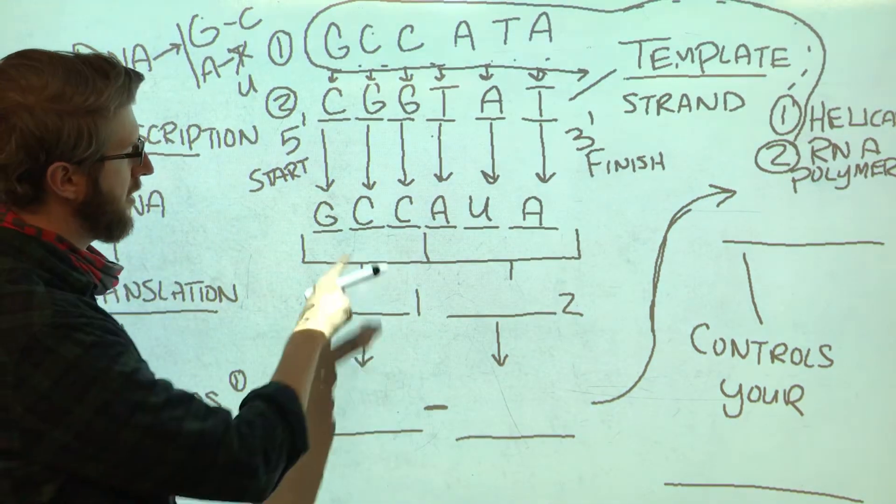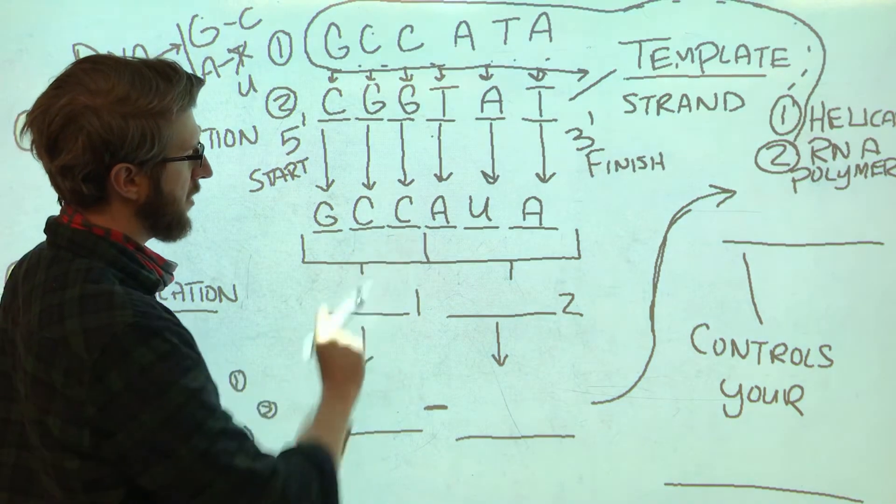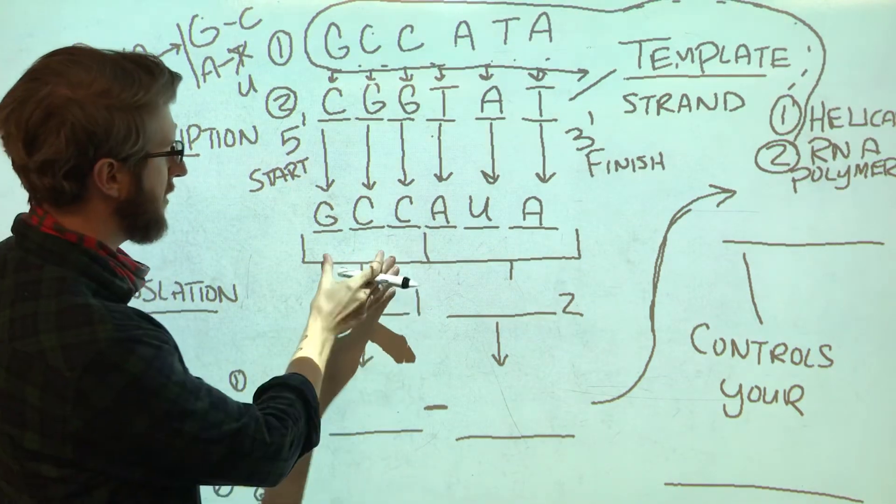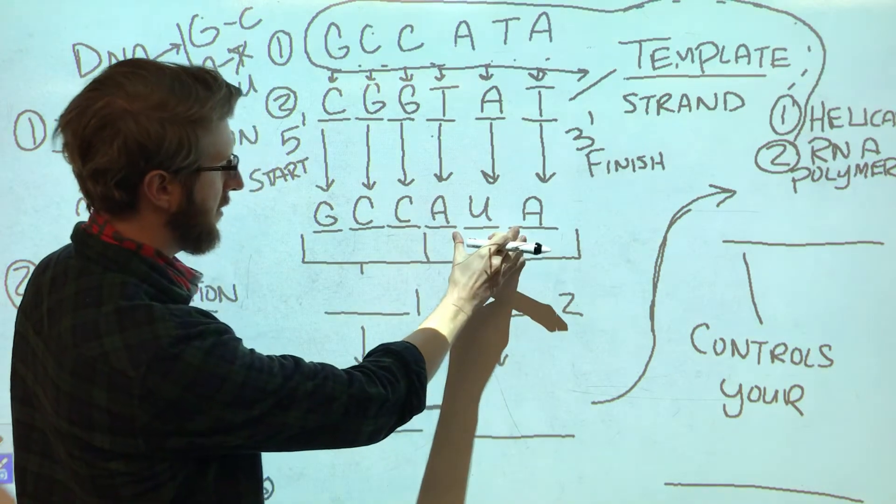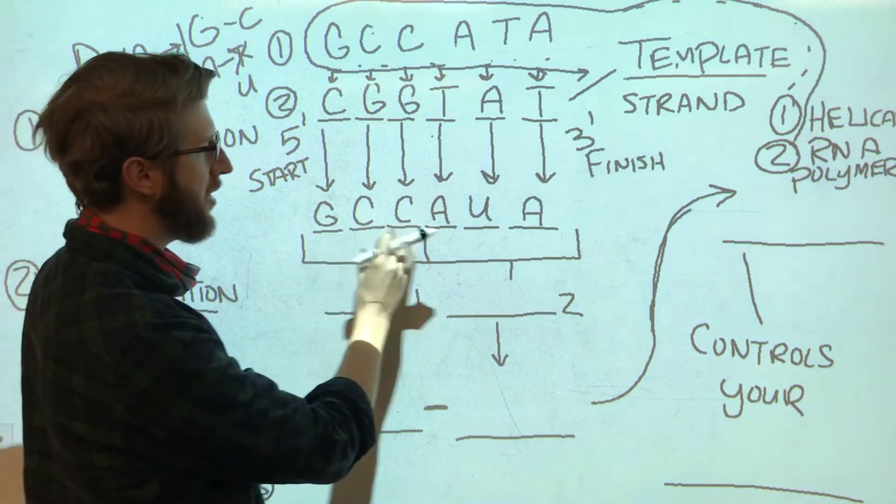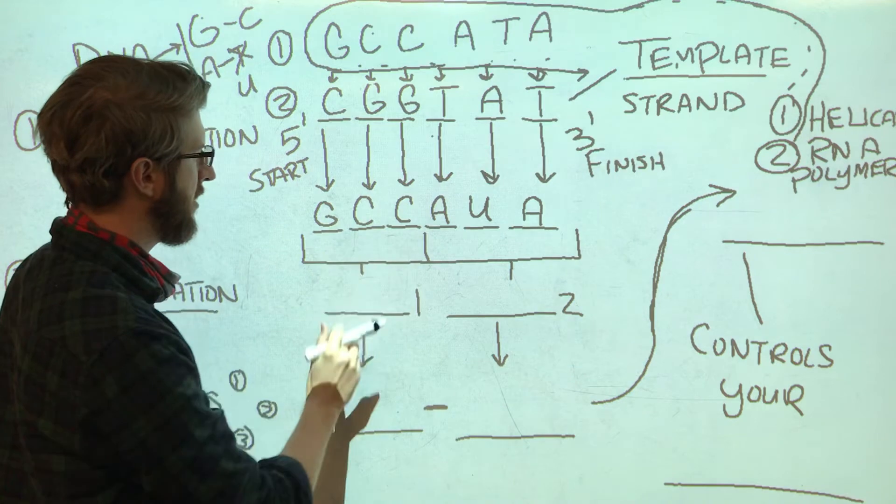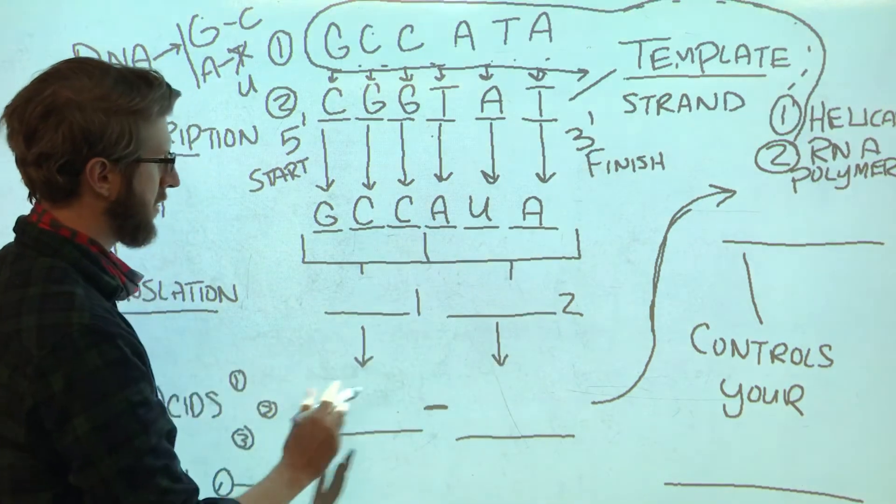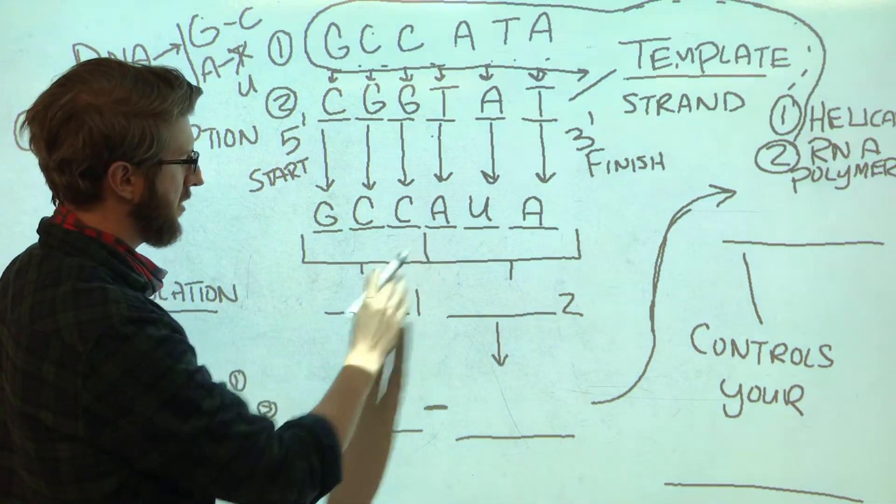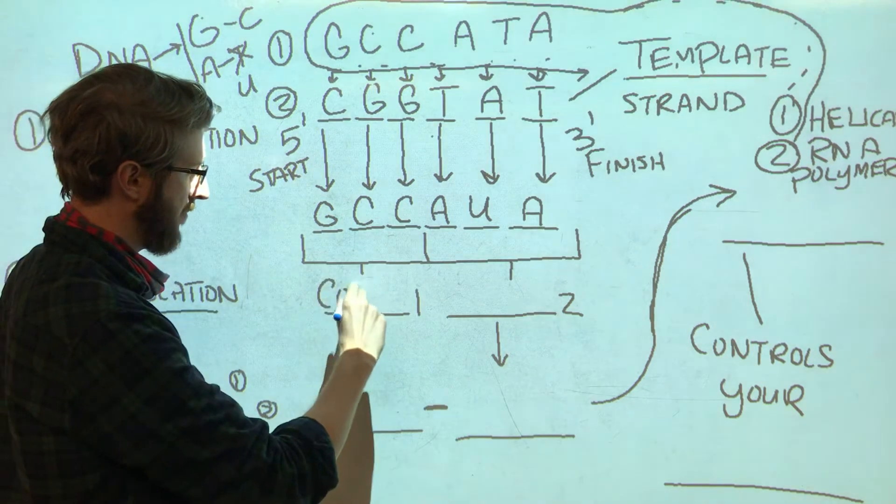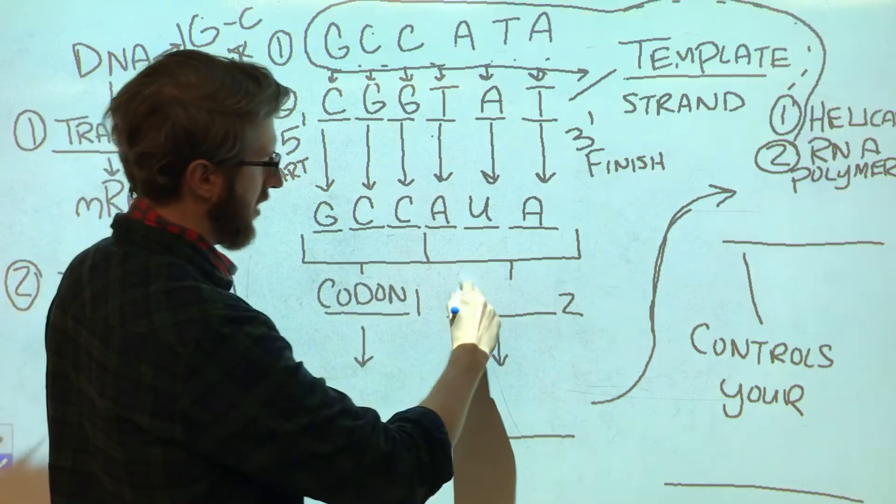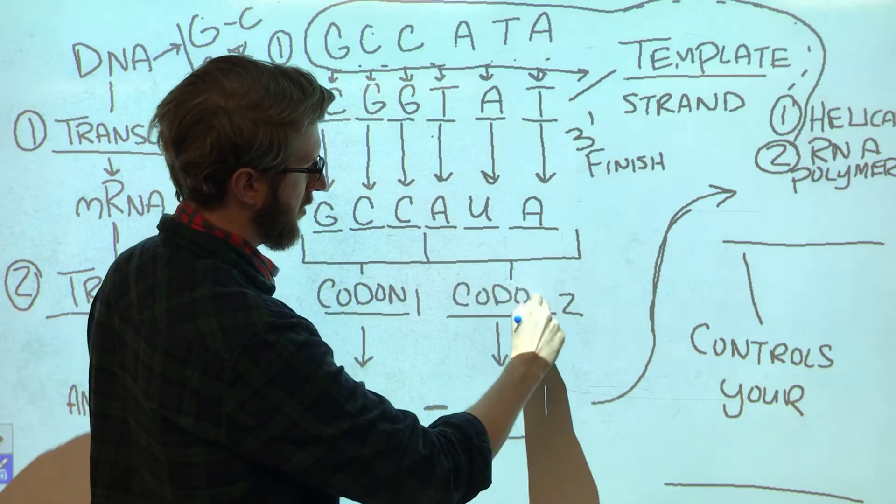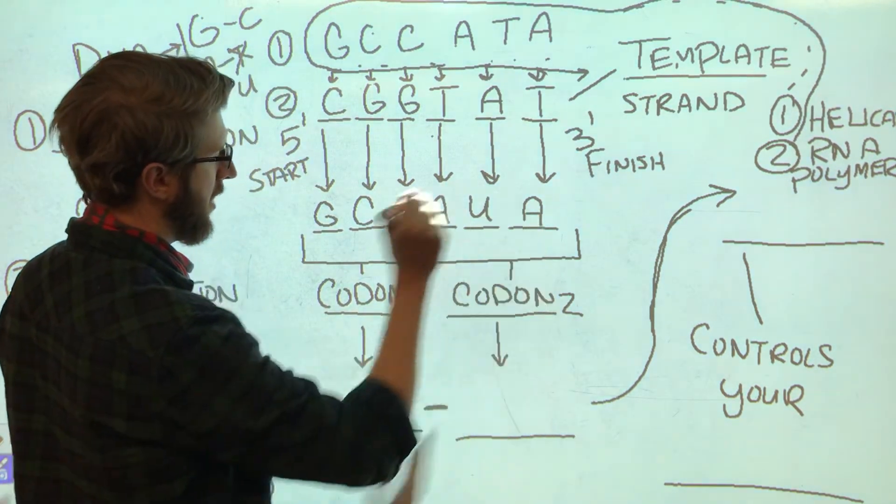Now each of these three letters—these first three letters and the second three letters—your body's going to read them in groups of three, three by three. Each group of three is called a codon. So this is codon one, GCC, and this is codon two, AUA.